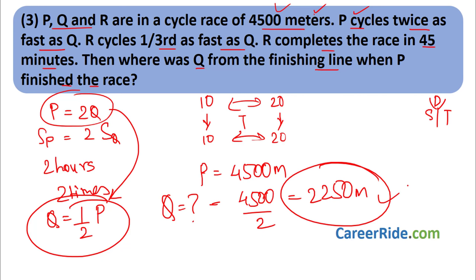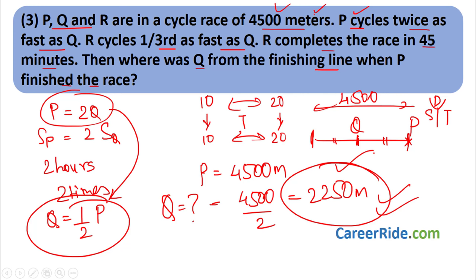Since Q has covered 2250 meters when P finishes, and the total track is 4500 meters, Q is at the center — 2250 meters from both the start line and the finish line. So Q is 2250 meters from the finishing line. This is how simple the sum is once you identify the relationship between speeds and distances.